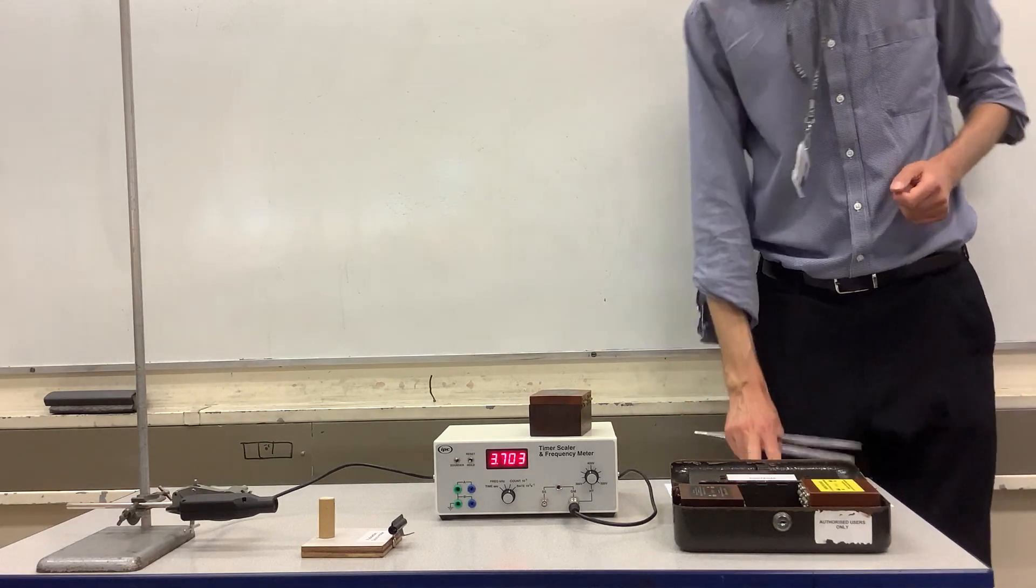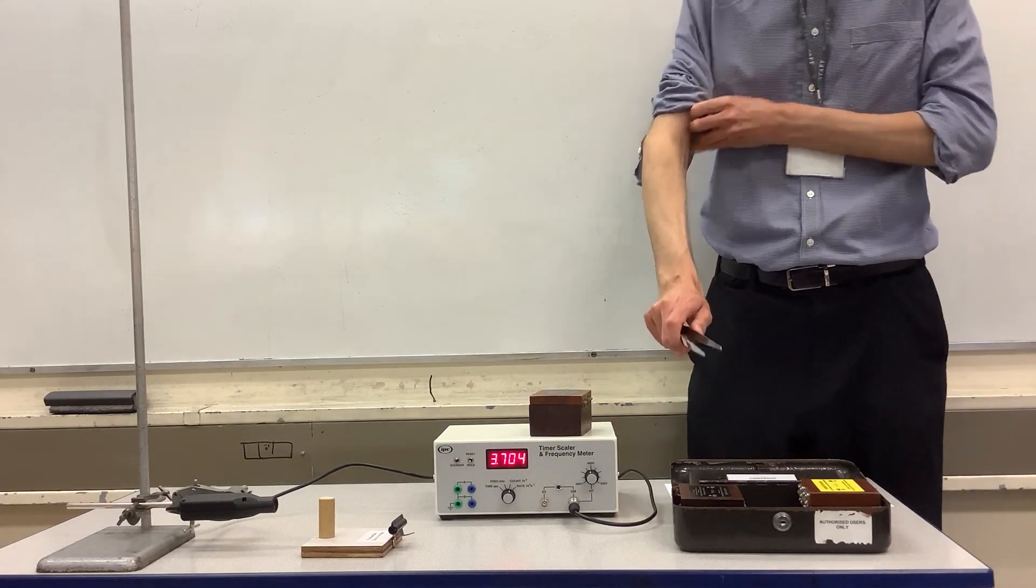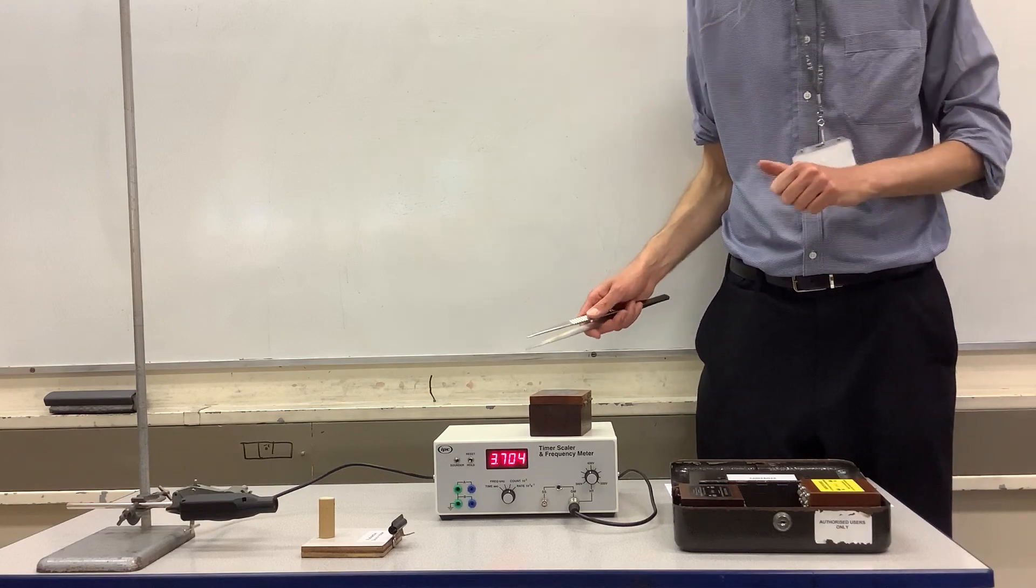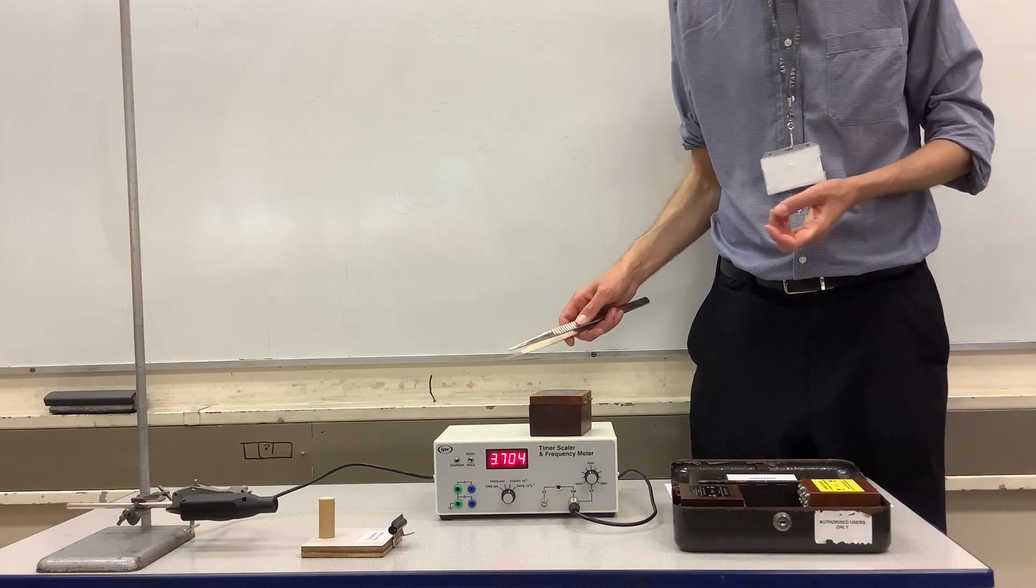We're now going to have a look at the properties of alpha radiation, and for this we're going to use the school's plutonium-239 source, which gives out alpha radiation.